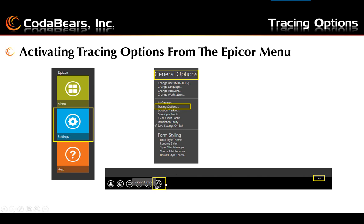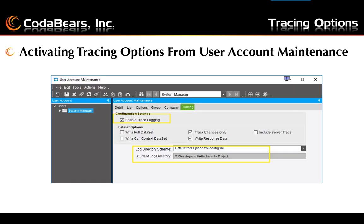An alternate way is to use the tracing options item using the caret that will show the hidden icons from the EPICOR main menu. If you have permissions, the rightmost icon should be your selection for tracing options. You can hover over the icon to see if you have the correct one selected. You can also activate tracing options from the user account maintenance.